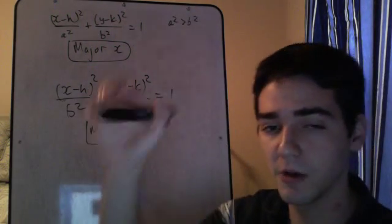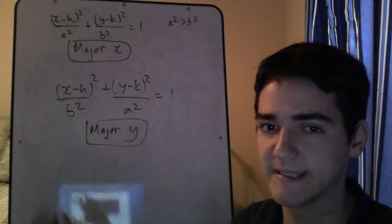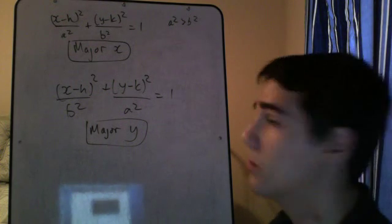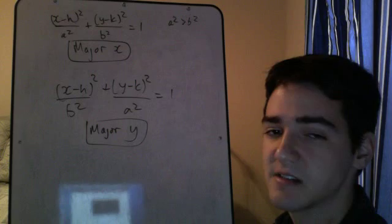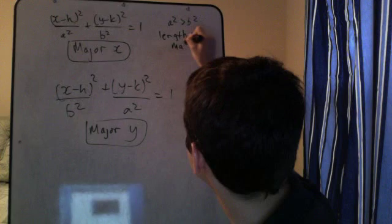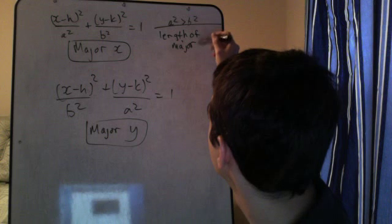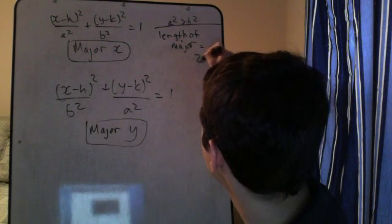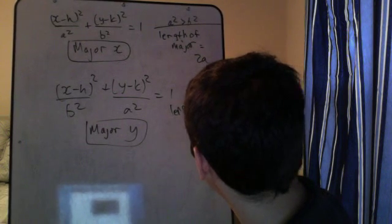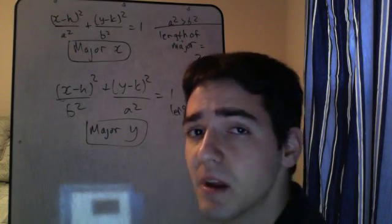So if you go from the center to each edge, that gives you its, I guess, I don't know, kind of like a diameter, but not really. But what we'll call that is the length of the major axis. So the length of major axis, and this works for both types of ellipses. Major is 2a and length of minor equals 2b. And it works every time. Okay.